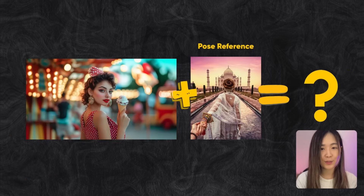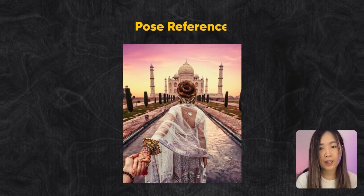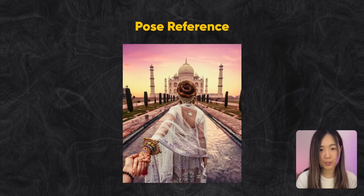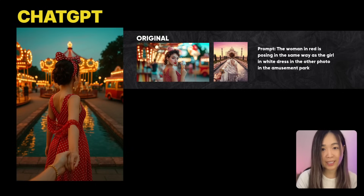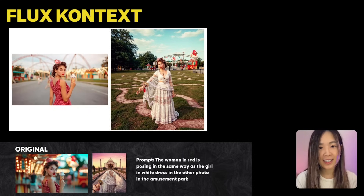Let's test using one image as a pose reference to recreate the same character in that pose. I uploaded a 'follow me' photo — the popular social media pose — and prompted: 'the woman in red dress is posing the same way as the girl in white dress in the other photo, in the amusement park.' ChatGPT nailed it, extracting the specific elements from the reference image and combining them with the character photo. Context didn't quite understand, placing both subjects in the same image instead. For multiple images with complex instructions, ChatGPT takes the win.